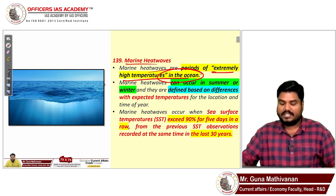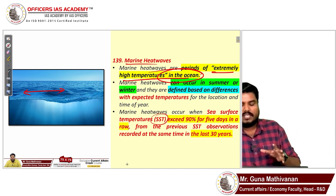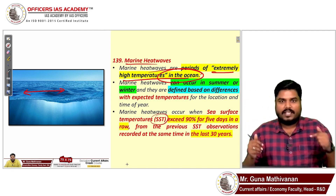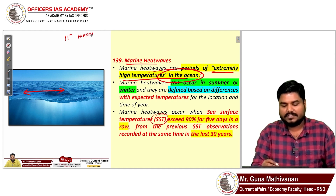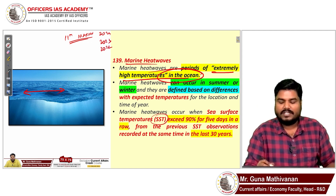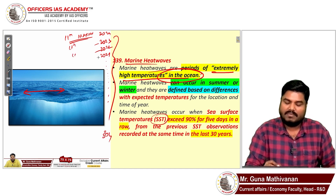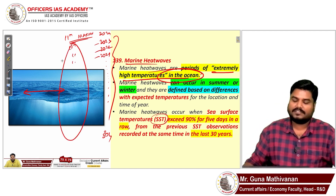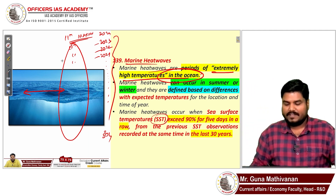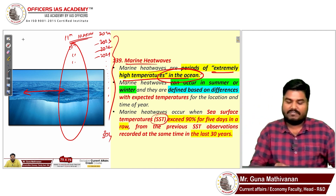To calculate marine heat waves, we take the sea surface temperature. For example, today is 11th March 2024. I go back to the same date — 11th March — for the last 30 years: 2023, 2022, 2021, and so on. Over those 30 years on the same date, I find the maximum average temperature. Say that maximum is 30 degrees Celsius.